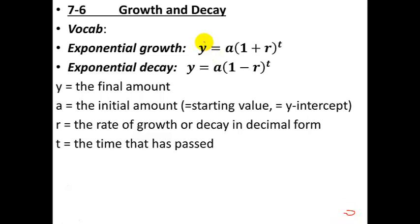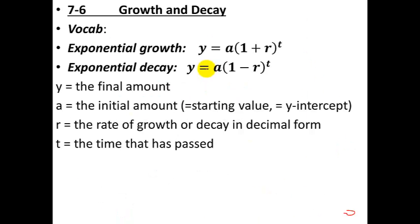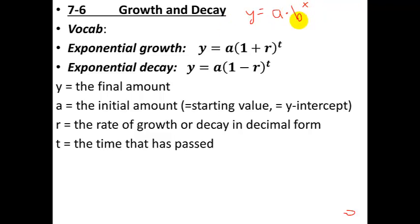Here we go with section 7.6, growth and decay. It's mostly a continuation of section 7.5 where we had the equation y equals a times b to the x. The coefficient a is in the front, b is a number, and the variable x is an exponent. That was either growth or decay depending on whether b was larger than one or smaller than one. We're going to dive into this b value a little bit more by looking at two different variations of this equation.